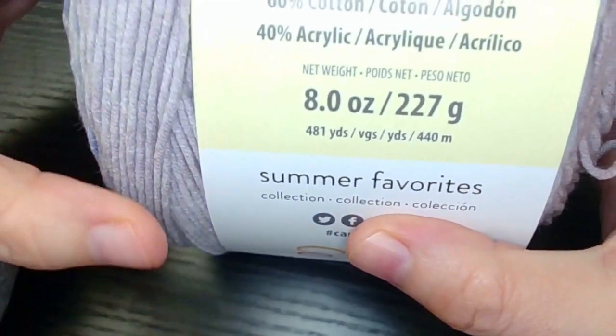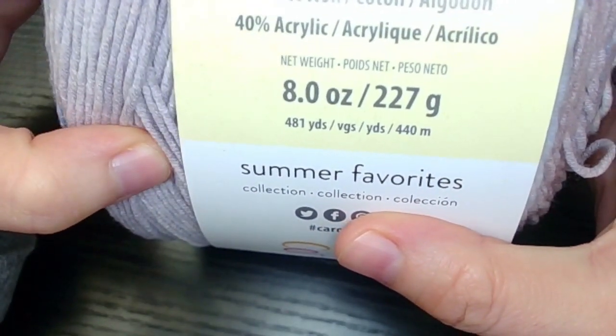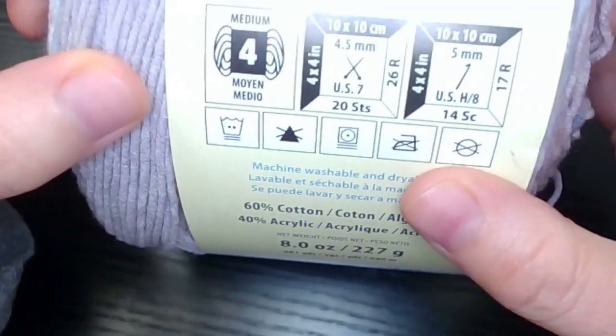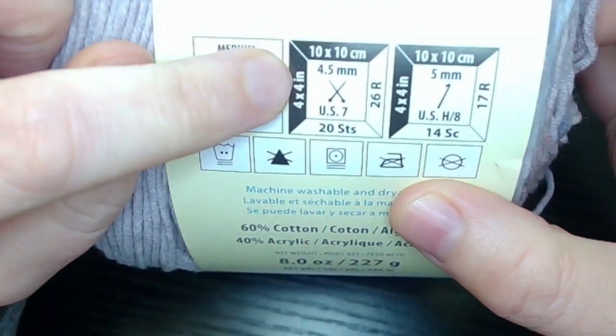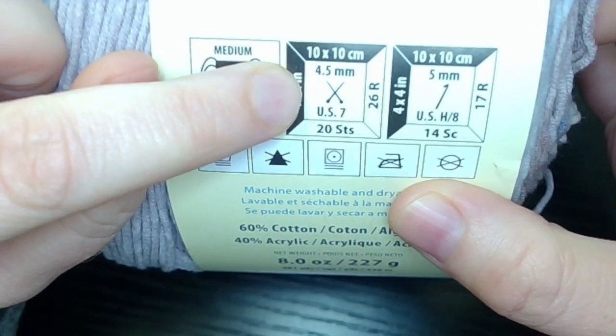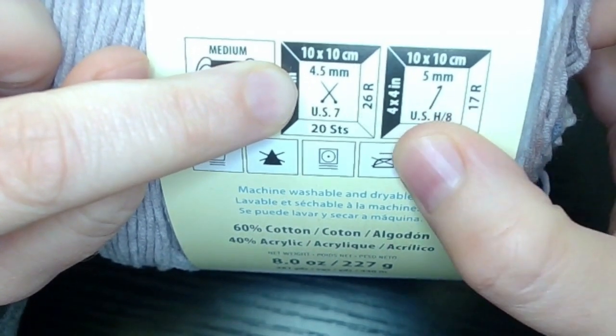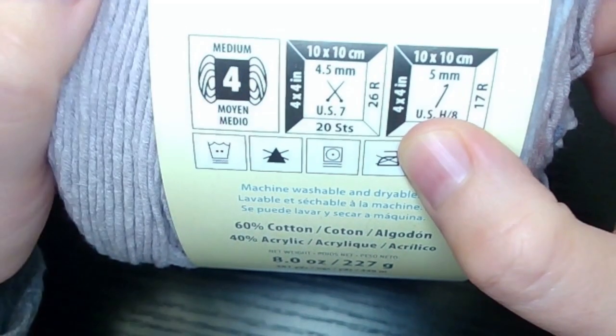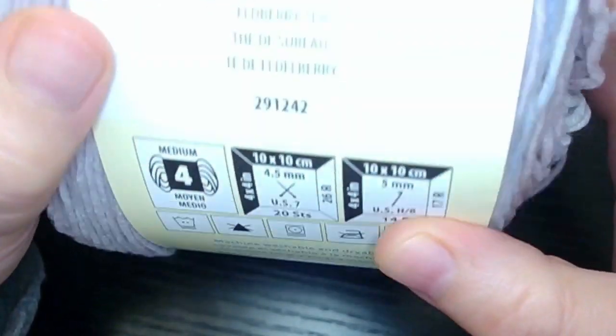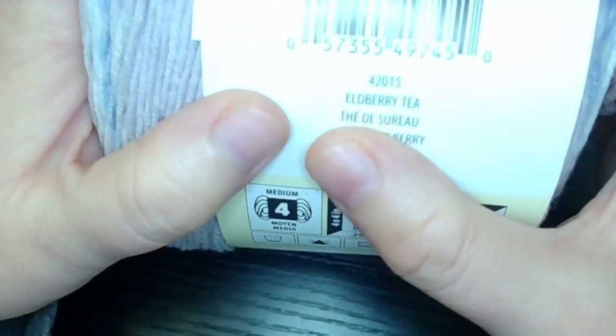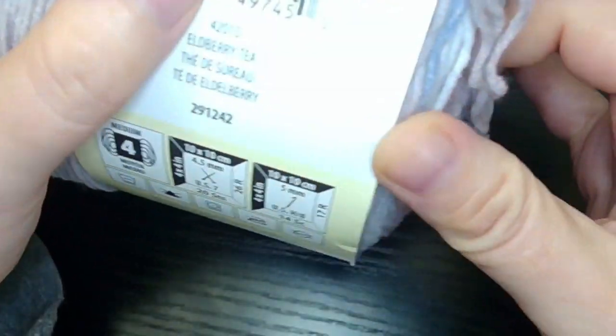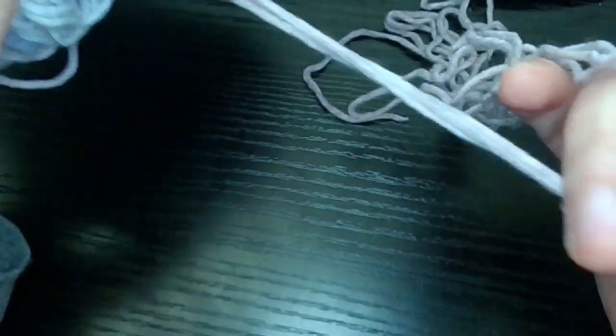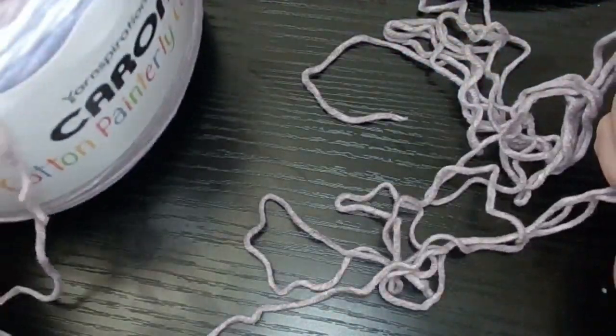This is 40% acrylic, 60% cotton. It is a medium four weight yarn. Caron recommends 4.5 millimeter knitting needles or a 5 millimeter crochet hook. It is machine washable and dryable, though I don't think you should. It's in the color Elderberry Tea.